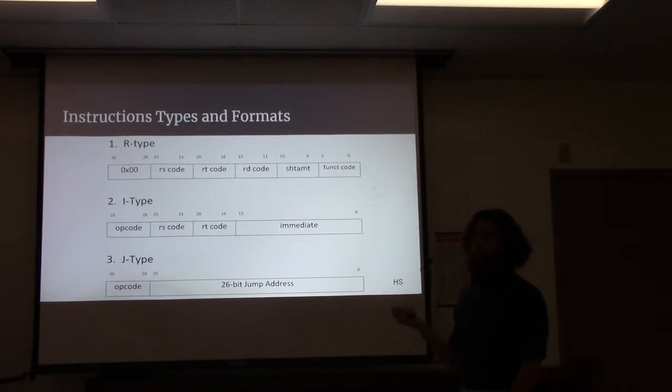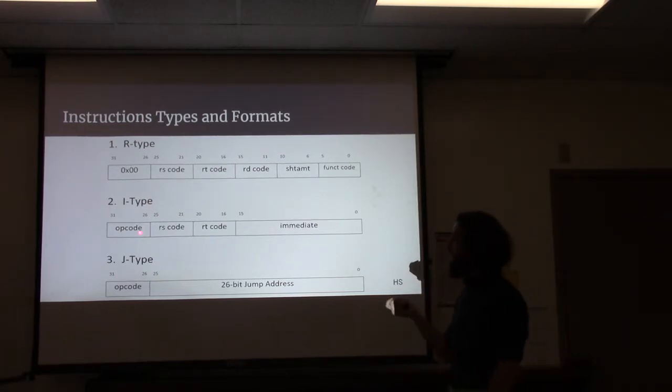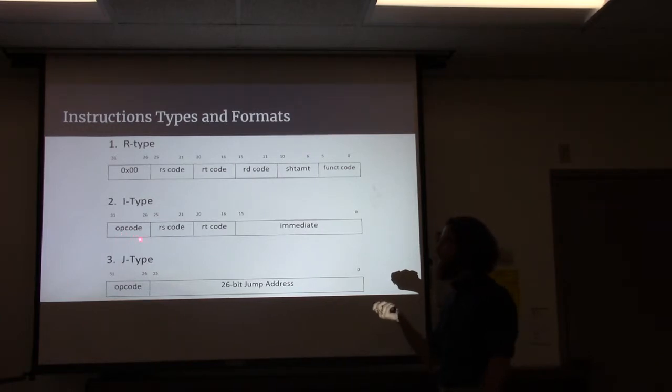With the I-type instruction, the opcode specifies what type of I-instruction we are performing. It's followed by the RS and RT registers, and then the 16-bit immediate value, which I discussed earlier.